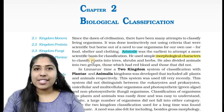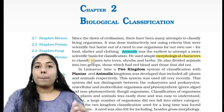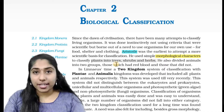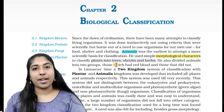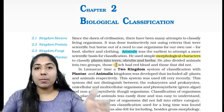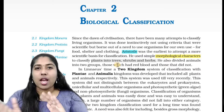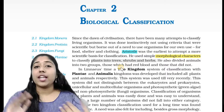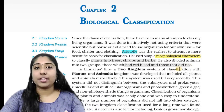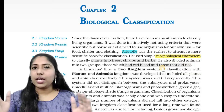We classify plants and animals using Morphological Characters. Plants were classified as trees, herbs, and shrubs. Animals were classified as red-blooded and non-red-blooded. That is how animals are classified.